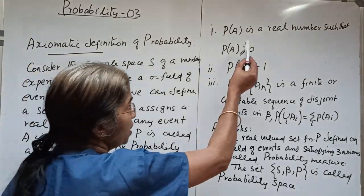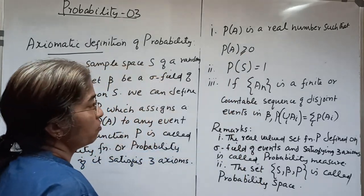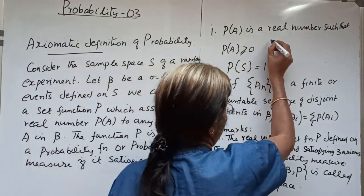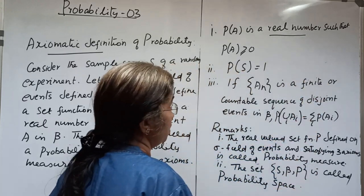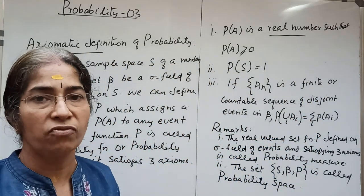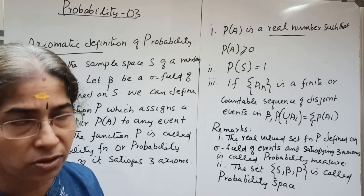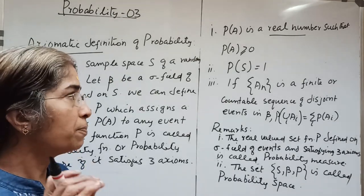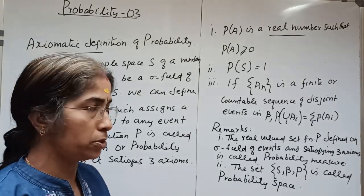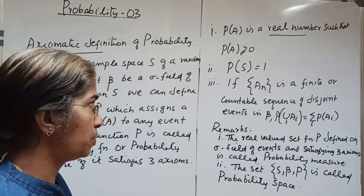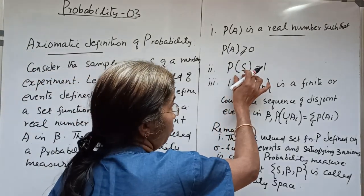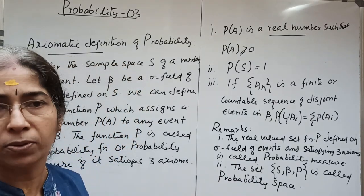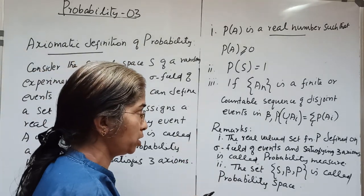The first axiom: P(A) is a real number such that P(A) ≥ 0 — that is, it is a non-negative number. The second axiom: P(S) = 1, meaning the probability of the sample space equals one.